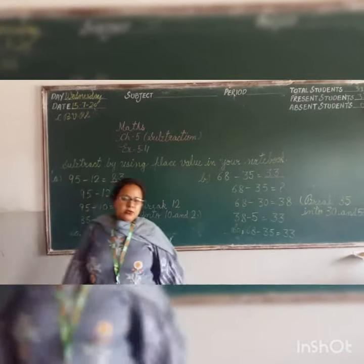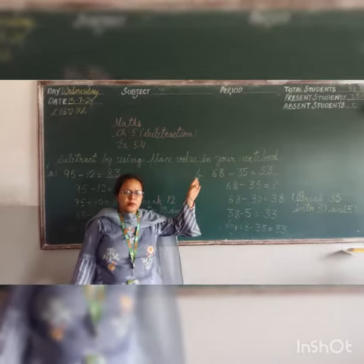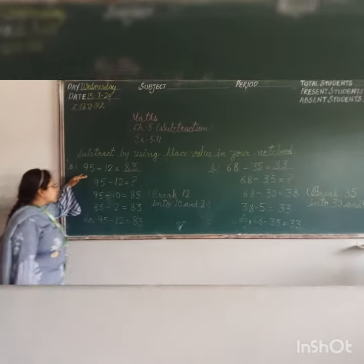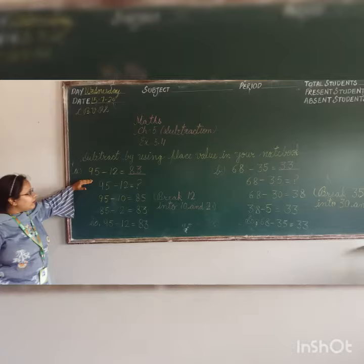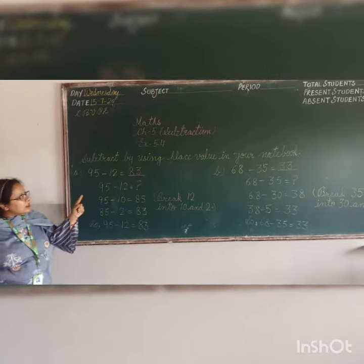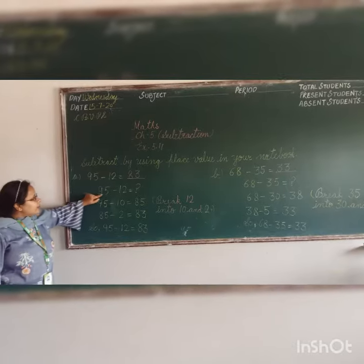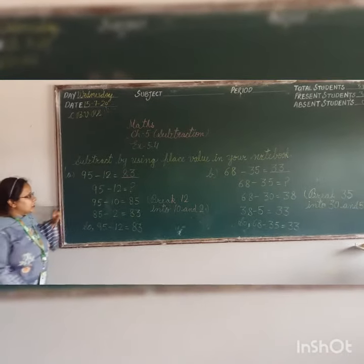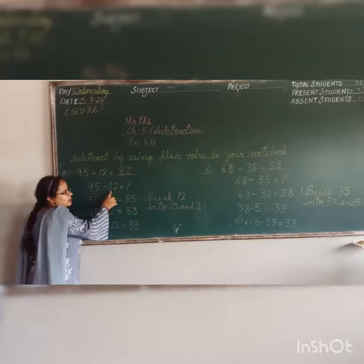Place values are used. Subtractions are needed. Place values are used. So, 95 minus 12. 95, which means 12 minus — place values are used. 95 minus 12 — which means, to break 12, place values are used.